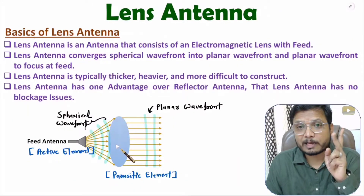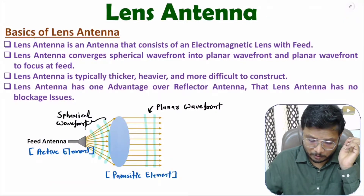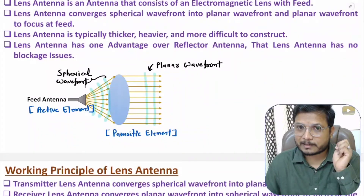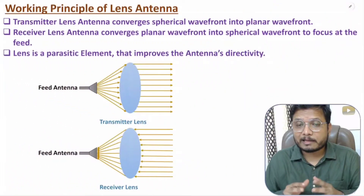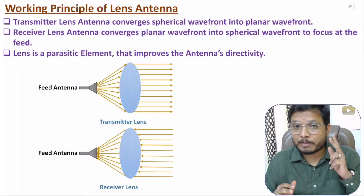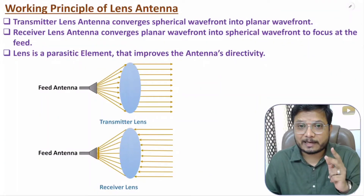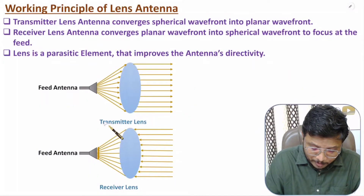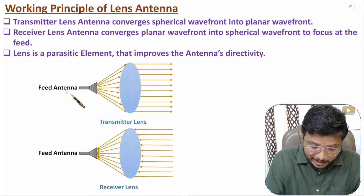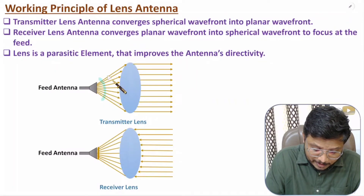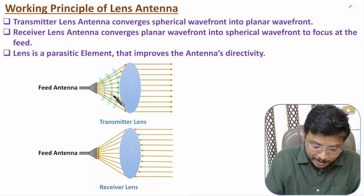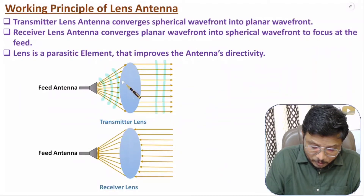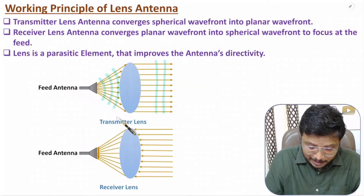Now I'll explain the working principle. Lens antenna can be used as a transmitter as well as a receiver. When used as a transmitter, the lens antenna converts spherical wavefront into planar wavefront. The feed antenna transmits EM waves with spherical wavefront, and these spherical wavefronts are converted into planar wavefront using the lens.